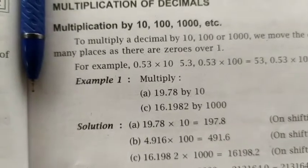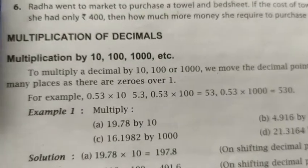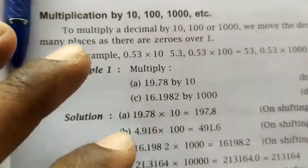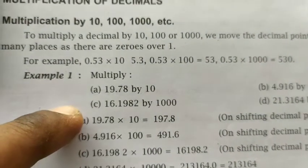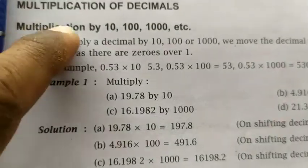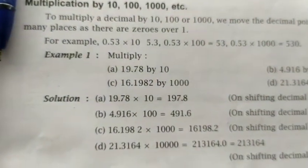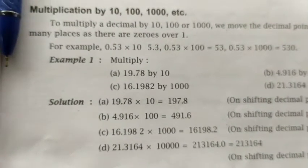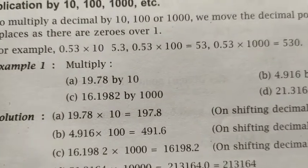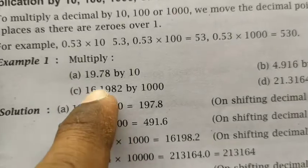Today we will do the multiplication of decimals. It's very simple. For the first set of questions, we have to multiply by ten, hundred, or thousand. We just have to follow a simple rule — let's see the first question.